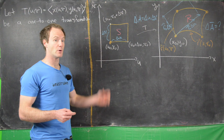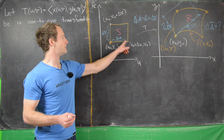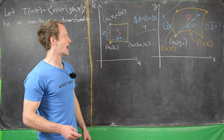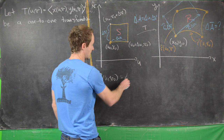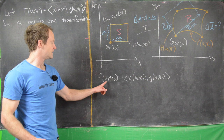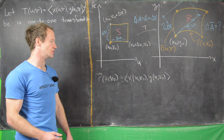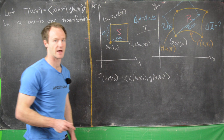Now we want to see what happens if we push this rectangle into the xy-plane, where we no longer have a rectangle. This bottom edge will go to a curve in the xy-plane. The function r(u, v₀) is defined as (x(u, v₀), y(u, v₀)). With v₀ fixed, this is just a curve in the xy-plane parametrized by u. So this bottom edge is going to go to this curve.